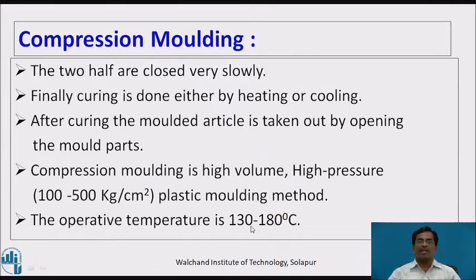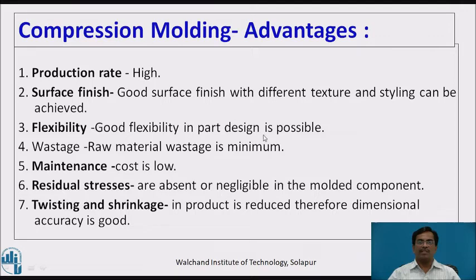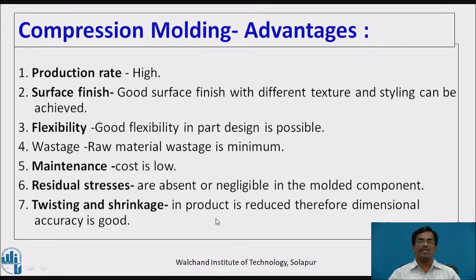The operative temperature is 130 to 180 degrees Celsius. Advantages: the production rate of this process is very high. The formed products have a good surface finish, and different textures and styling can be achieved. It shows very good flexibility in part design. Raw material wastage is minimum, and the maintenance cost of compression molding is very low. Residual stresses are absent or negligible in the molded components. Twisting and shrinkage in the product is reduced, and therefore dimensional accuracy is very good.